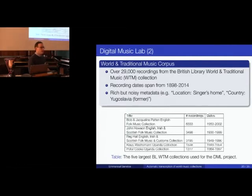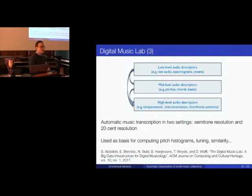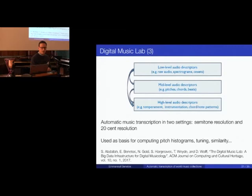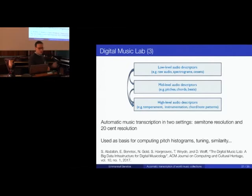These collections are predominantly from Britain and the British Isles, but also from the former empire or Commonwealth — Uganda and India, for example. In terms of MIR methods, we focused on various levels of descriptors or features: low-level audio descriptors such as spectrograms or onsets; mid-level descriptors such as note presence, chords, or beats; and finally higher-level concepts including temperament, instrumentation, or chord patterns. For automatic transcription we had two settings: semitone resolution and 20-cent resolution, especially useful for world music.